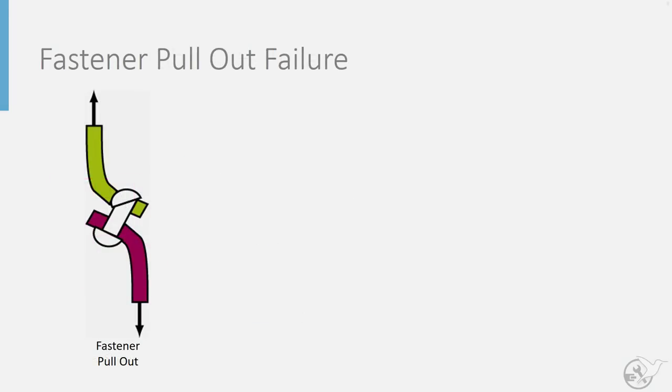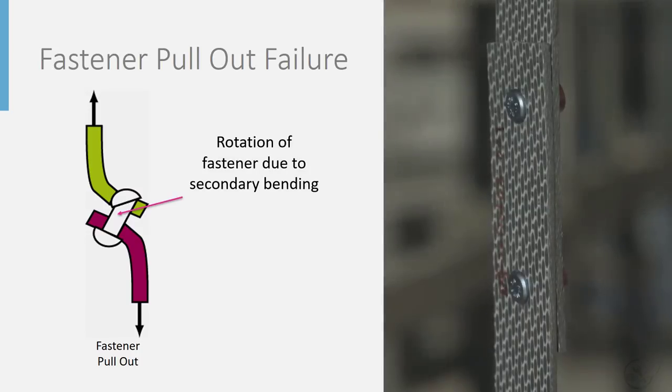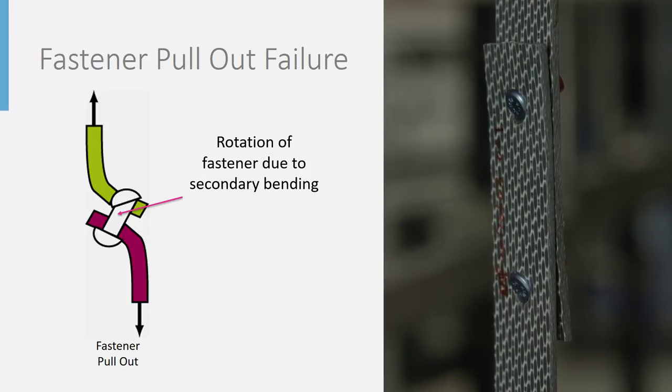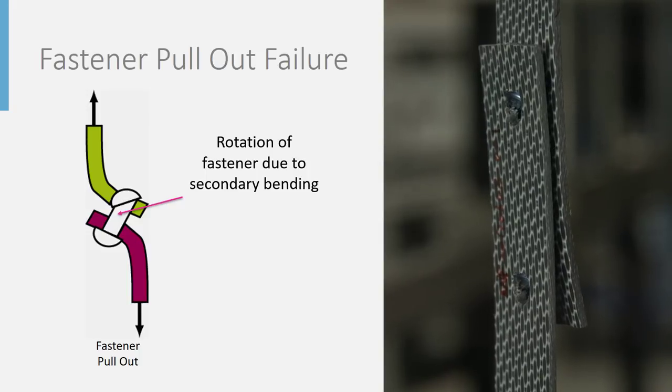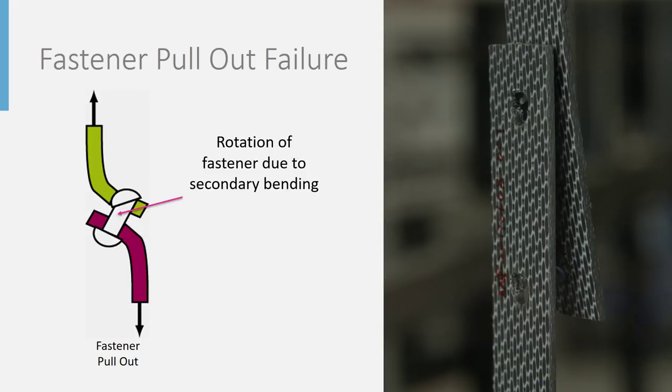Next we have fastener pull-out failure. Due to secondary bending, fasteners within a joint will tend to rotate. If the bending becomes large enough, the resistance to rotation provided by the fastener heads can be overcome, resulting in the fastener over-rotating and being pulled through the parts it is joining.